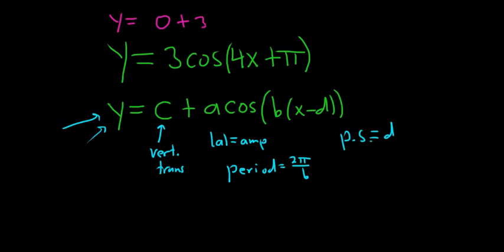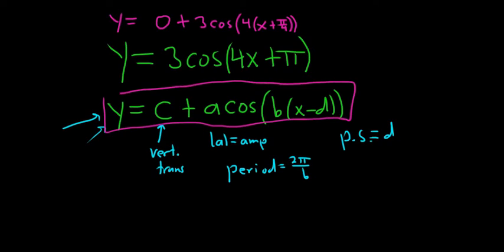So 0 plus 3 cosine and then we can pull out a 4. So 4 parentheses x plus and then pi over 4, parentheses, parentheses. So now we've made it fit this form that is down here. Okay, so let's go ahead and find everything.